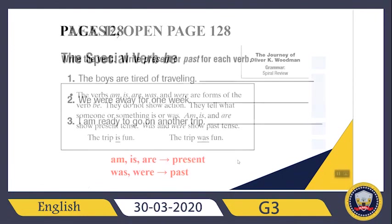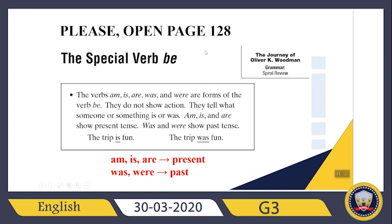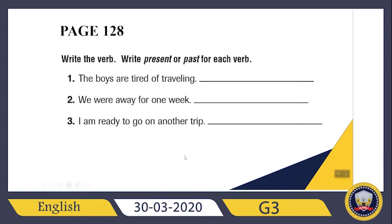Now let's check your exercise. It says: write the verb, then write present or past for each verb. The boys are tired of traveling. Which one is my verb? 'Are', right? So 'are' is my verb. Then I need to check: is this present or past tense? Am, is, are for present tense; was, were for past tense. I see 'are', so this is present tense.